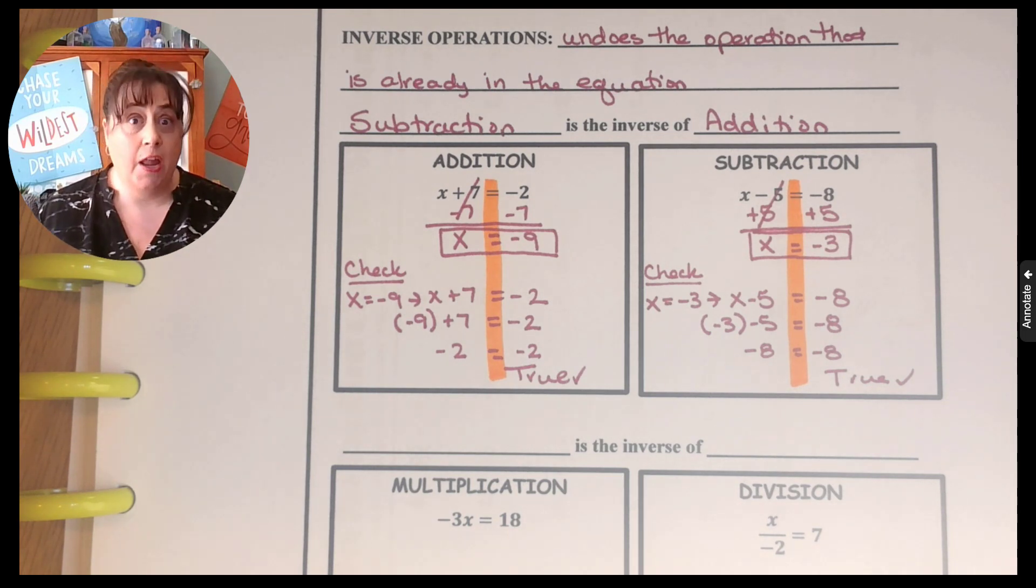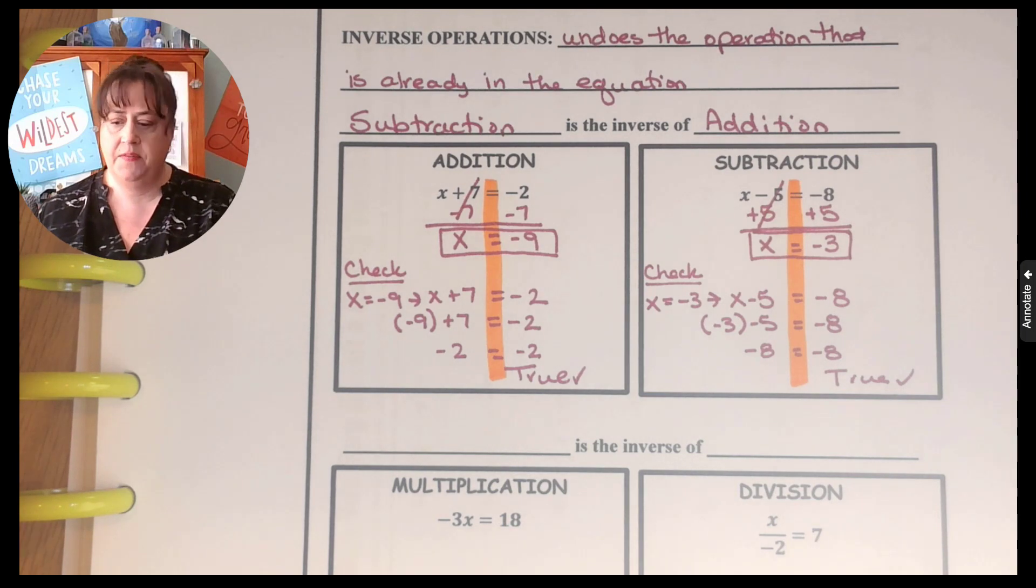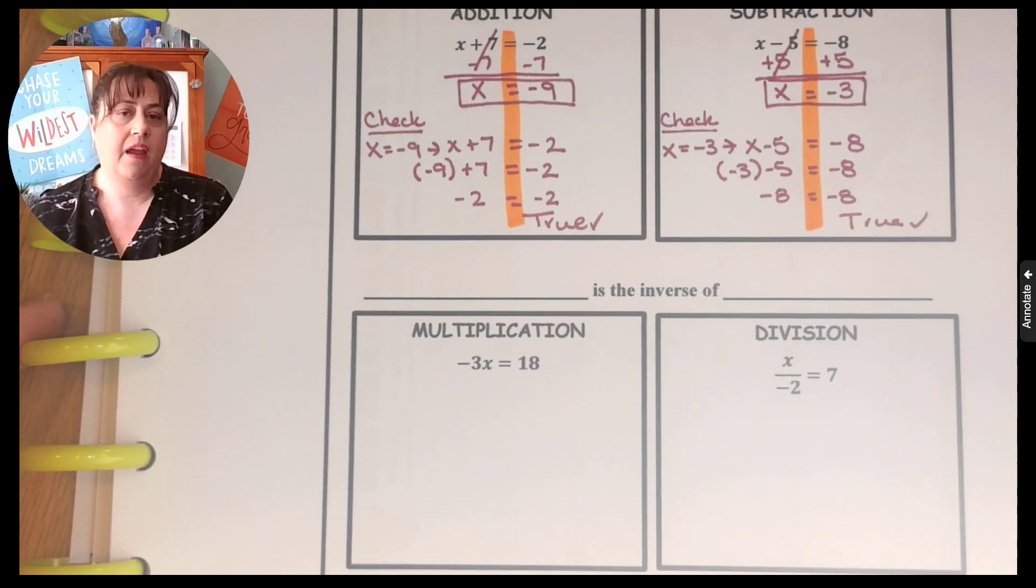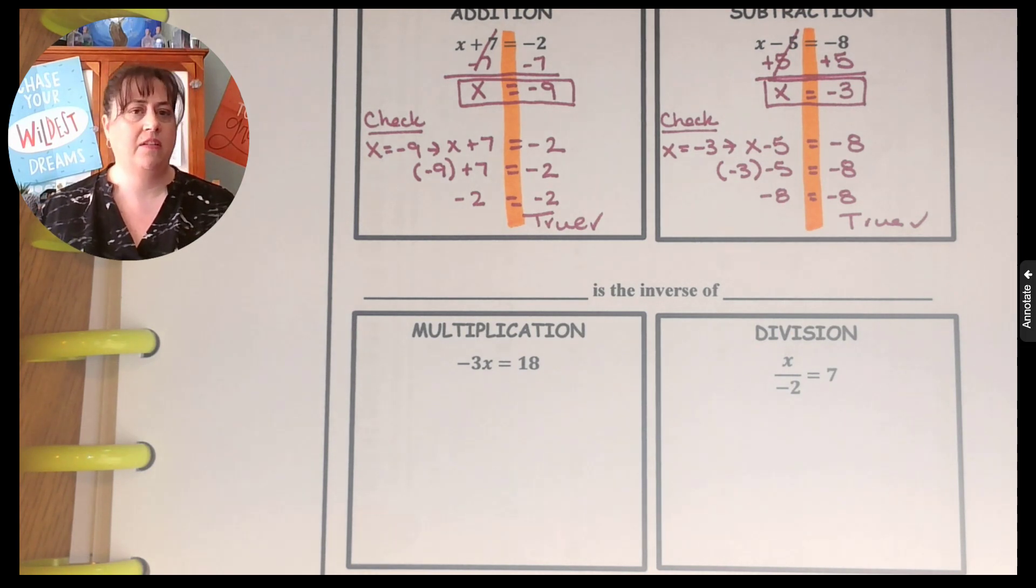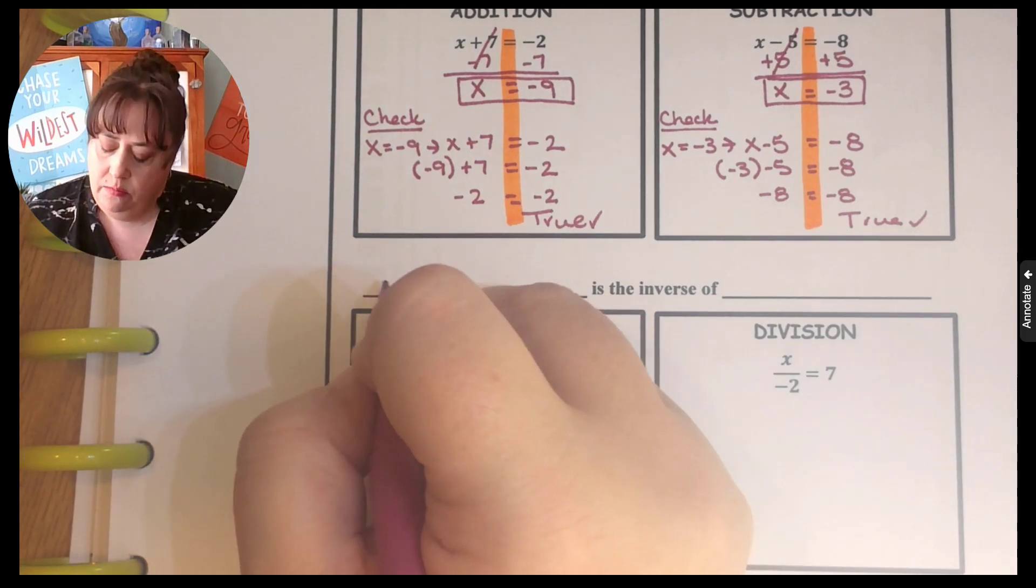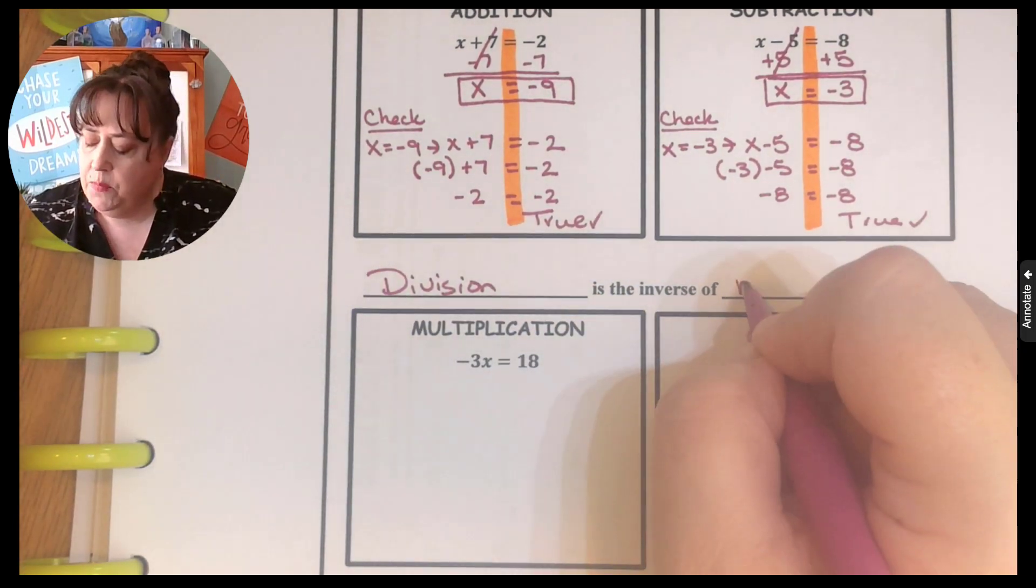And that's multiplication and division. So if you think about it, if I multiplied by five, five times four, and I got 20, if I wanted to go back to four, I would have to divide by five, right? So division is the inverse of multiplication.